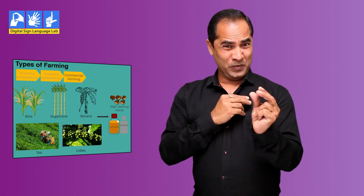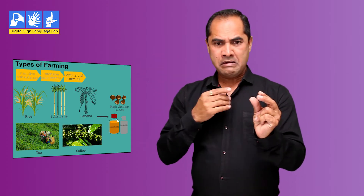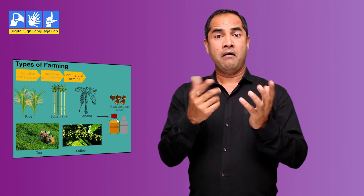The next type is commercial farming. This type of farming is done using higher doses of modern inputs, including high yielding variety seeds, which are very different from natural seeds. A lot of chemical fertilizers, insecticides, and pesticides are used in order to obtain higher productivity and profit.